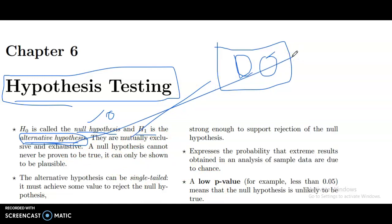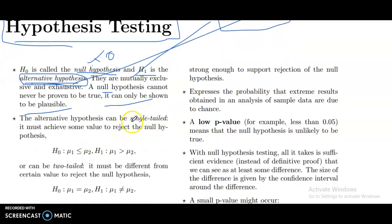A null hypothesis can never be proved to be true — it can only be shown to be plausible. The alternative hypothesis can be single-tailed; it must achieve some value to reject the null hypothesis.